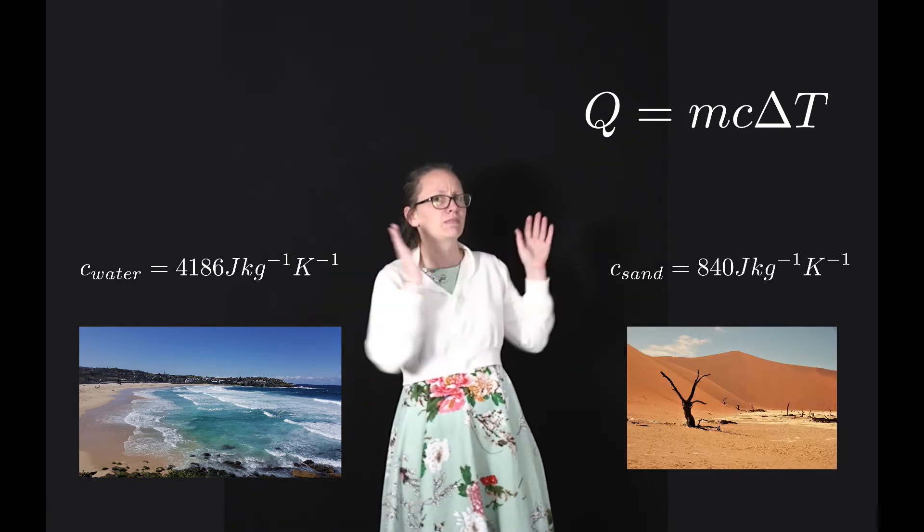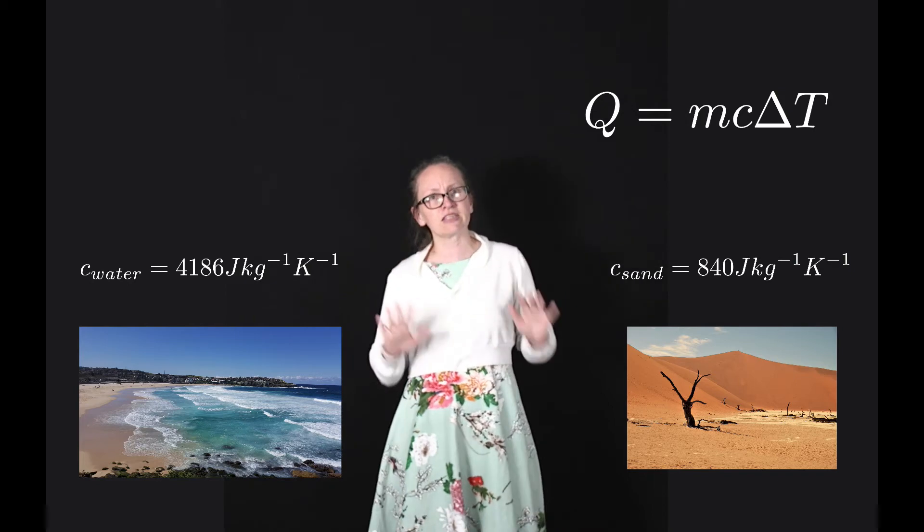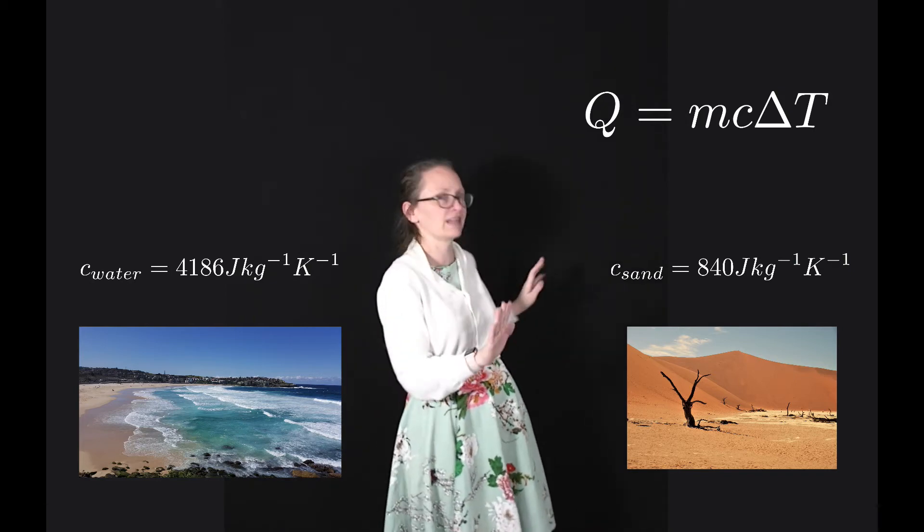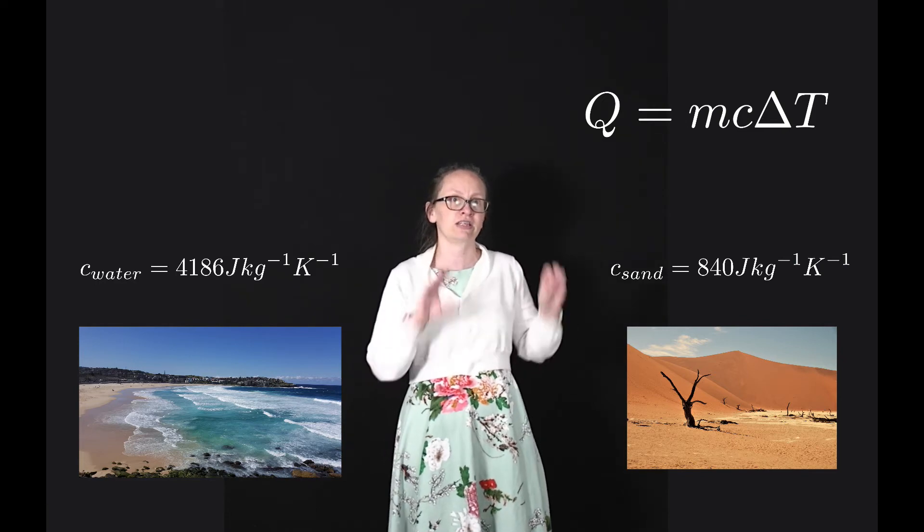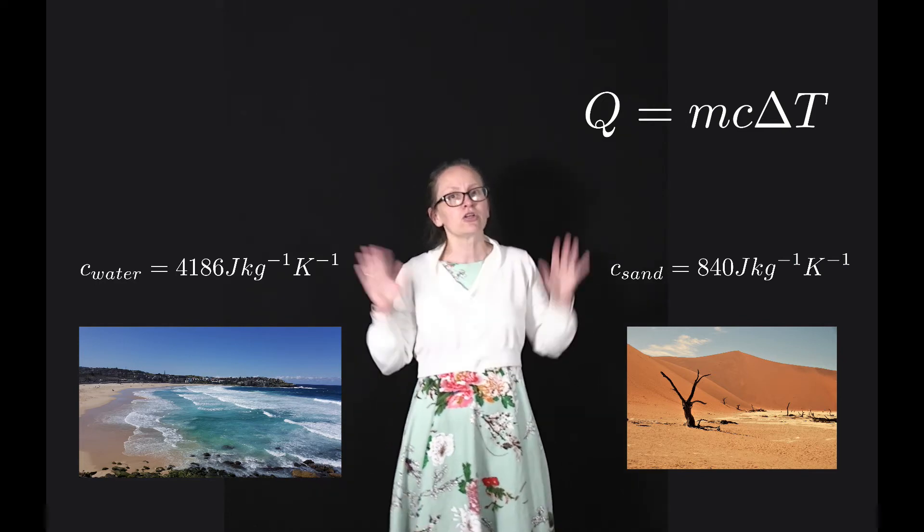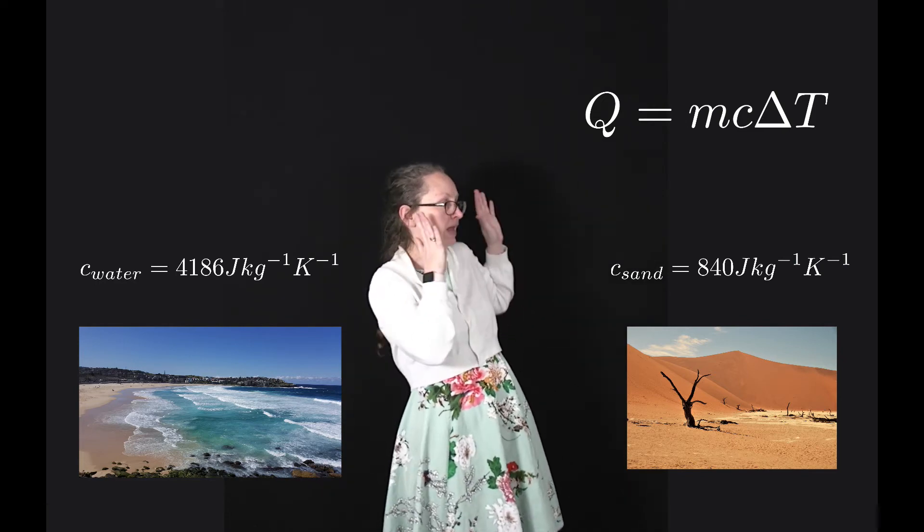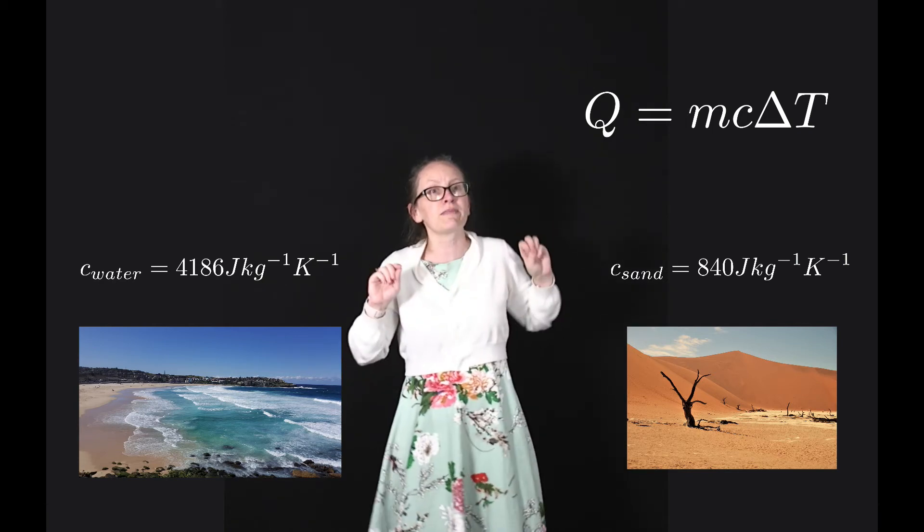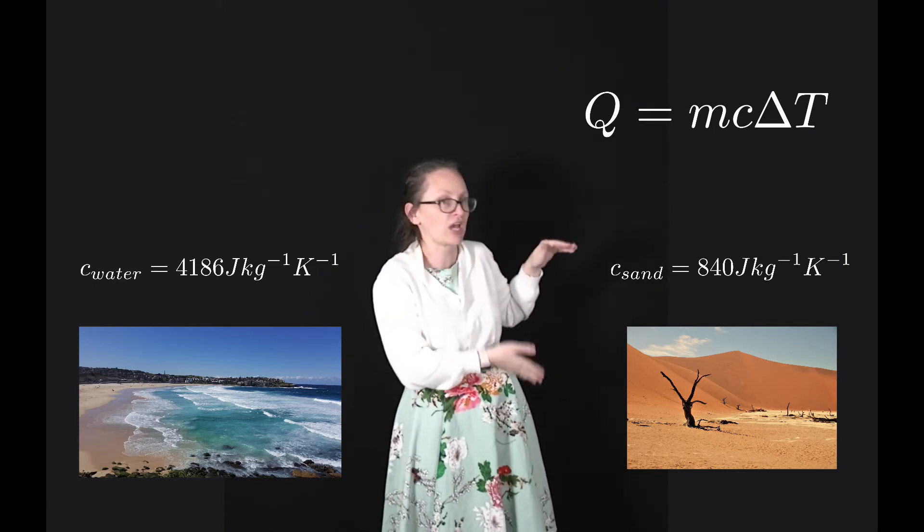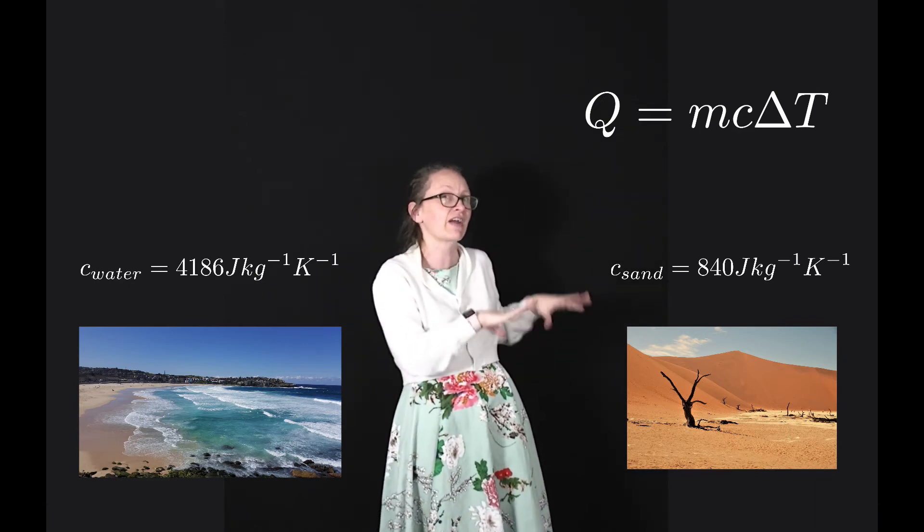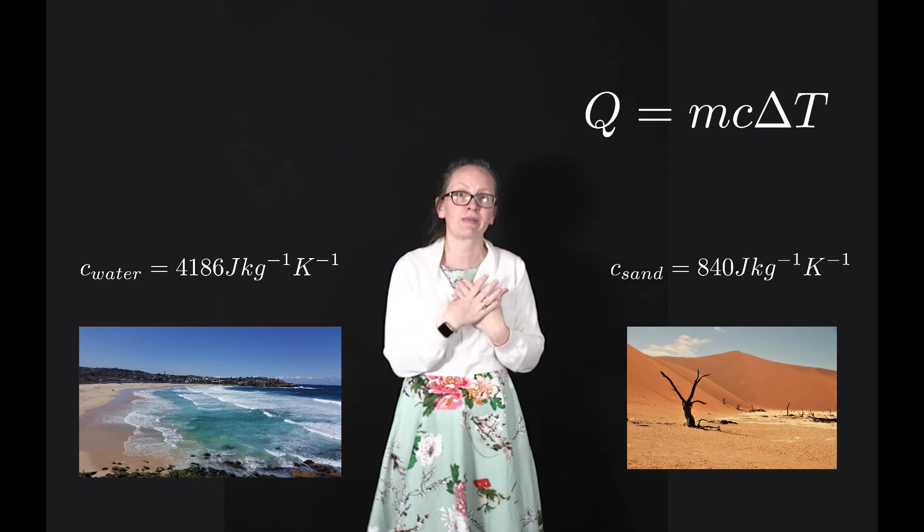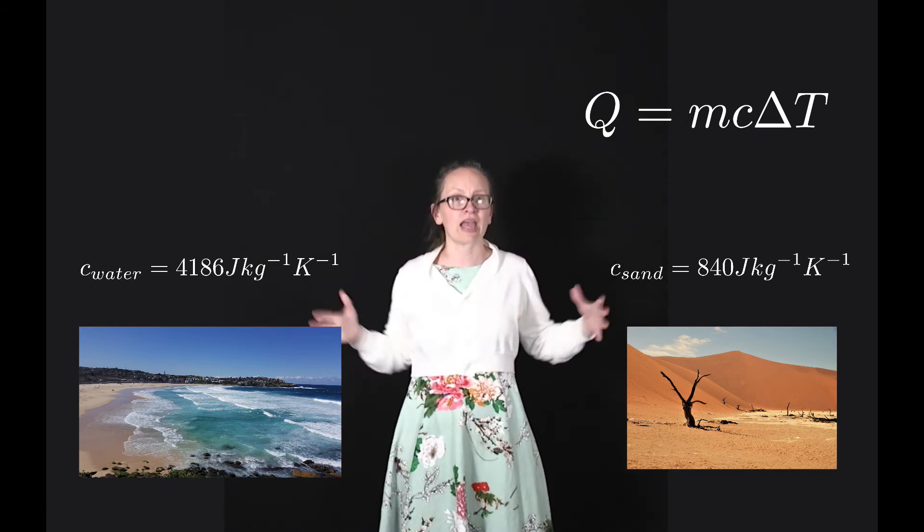Consider, on the other hand, being in the middle of a desert. In the middle of the desert, you can be surrounded by sand, and sand has a much lower specific heat of 840 joules per kilogram per kelvin. On the same hot day where we're supplying the same amount of energy from the sun, there's going to be a much larger temperature change in the sand. If you're standing on that sand, it's going to get very hot and you're going to experience a much higher change in temperature.